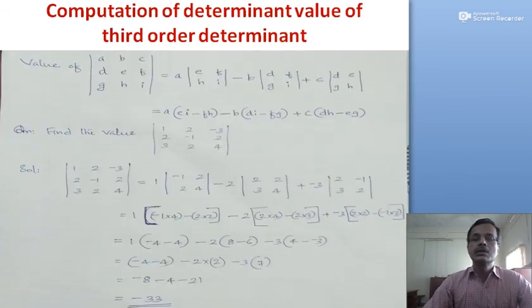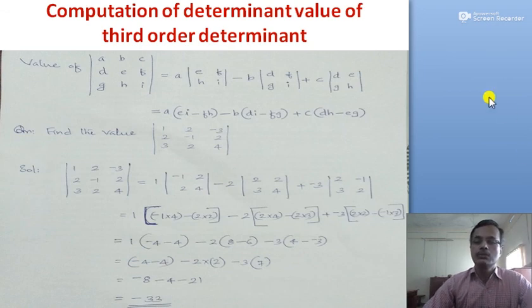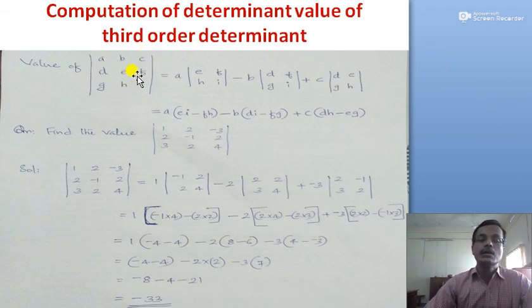Now, how do we compute a third order determinant value? Consider a 3×3 determinant with elements A, B, C in the first row; D, E, F in the second row; and G, H, I in the third row. We expand along the first row using each element of that row.